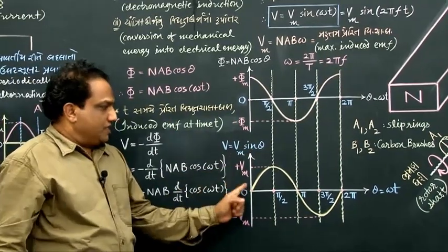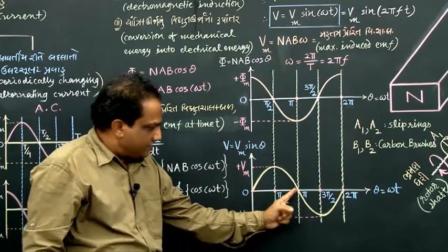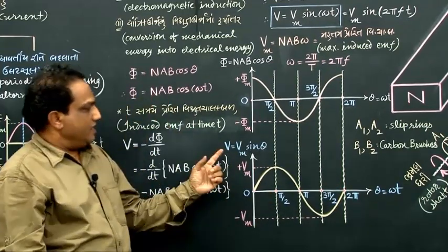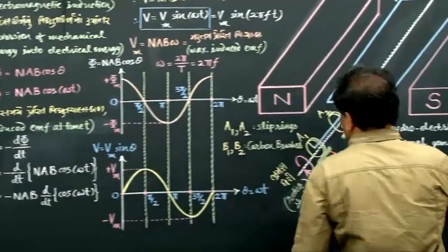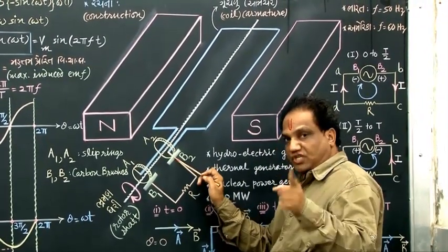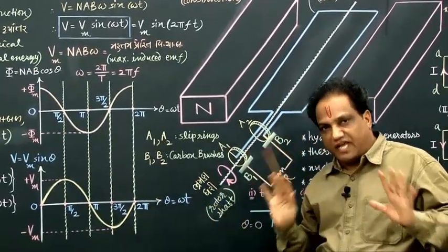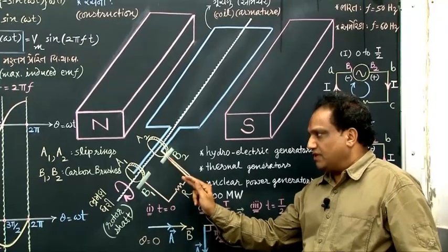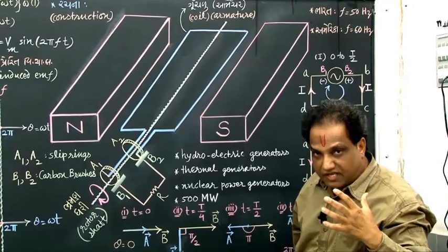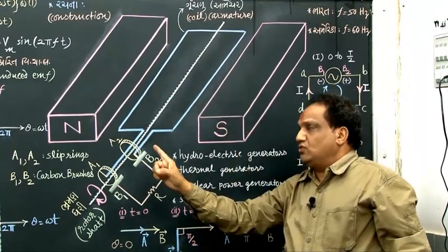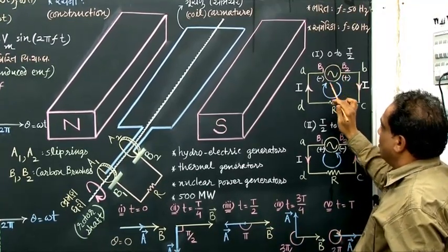The graph shows that in the first half cycle, values of voltage are positive, and in the next half cycle, values are negative. This induced EMF is the potential difference between the two carbon brushes B1 and B2. That potential difference changes alternately — positive, negative, positive, negative — so the polarity of the voltage between the two carbon brushes changes periodically. This whole arrangement is simplified in a circuit by the AC source circuit symbol — a circle with a sine wave drawn inside.